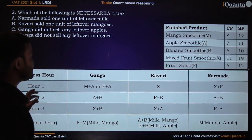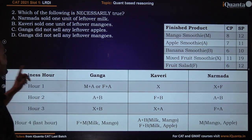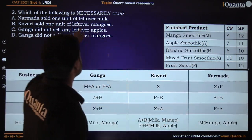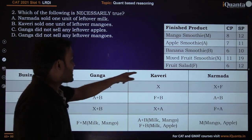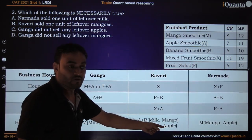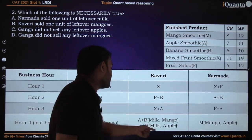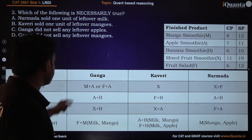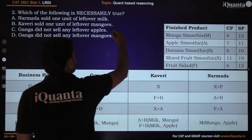Question two: Which statement is necessarily true? Narmada sold one unit of leftover milk — this is wrong. Kaveri sold one unit of leftover mango — possible but not necessarily true. Ganga did not sell any leftover apples — yes, this is necessarily true, since Ganga's leftovers were mango and milk.